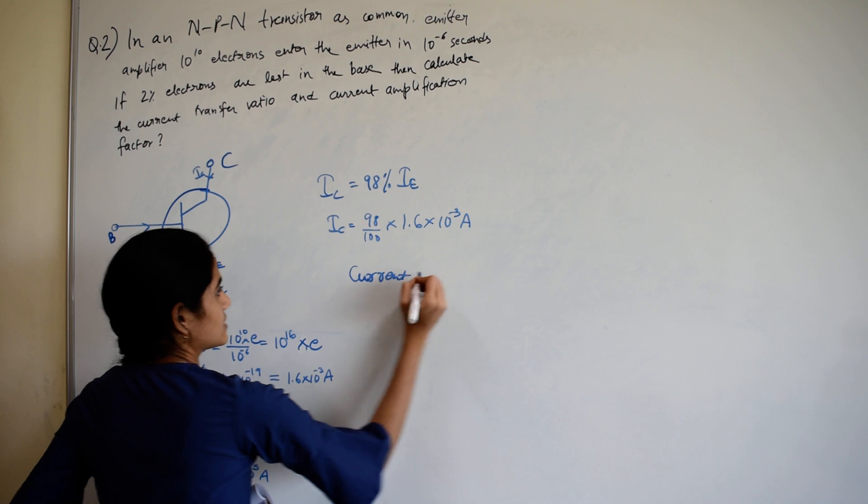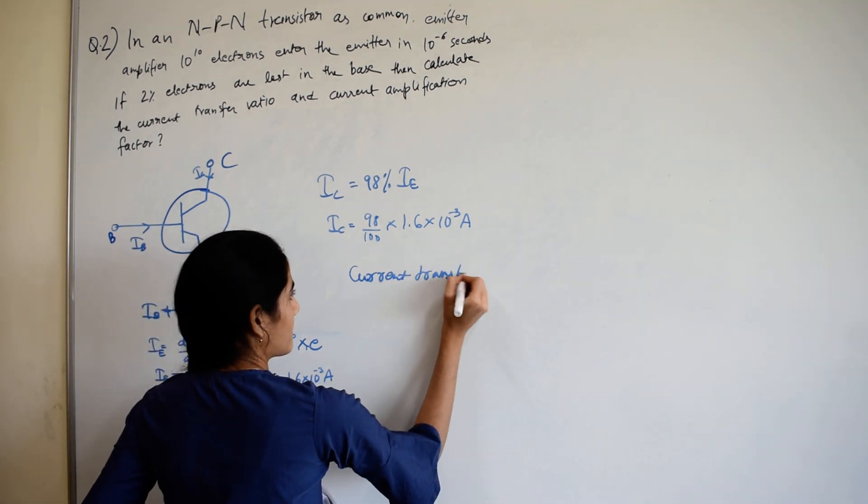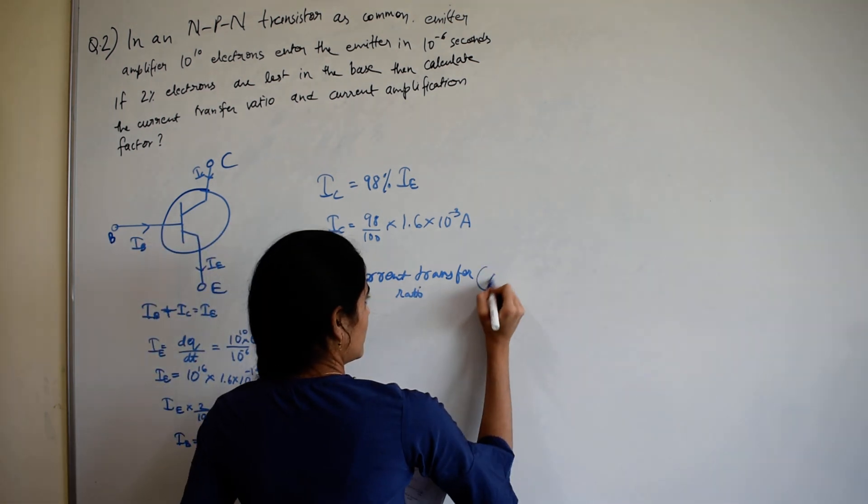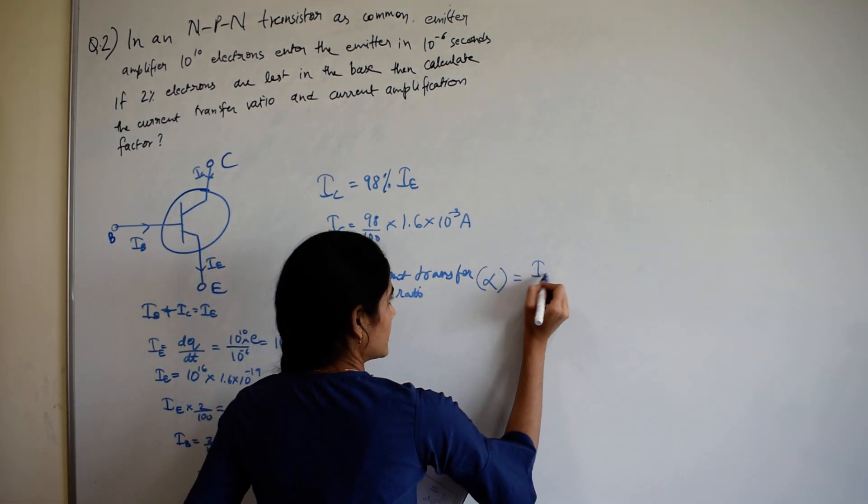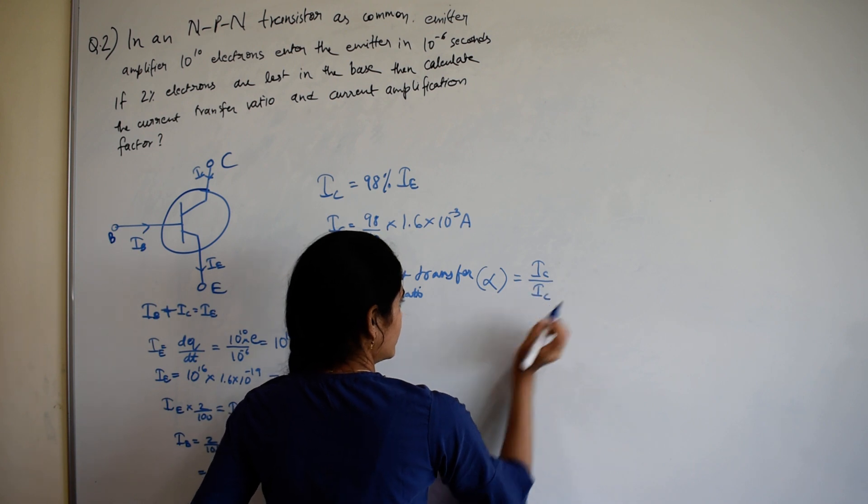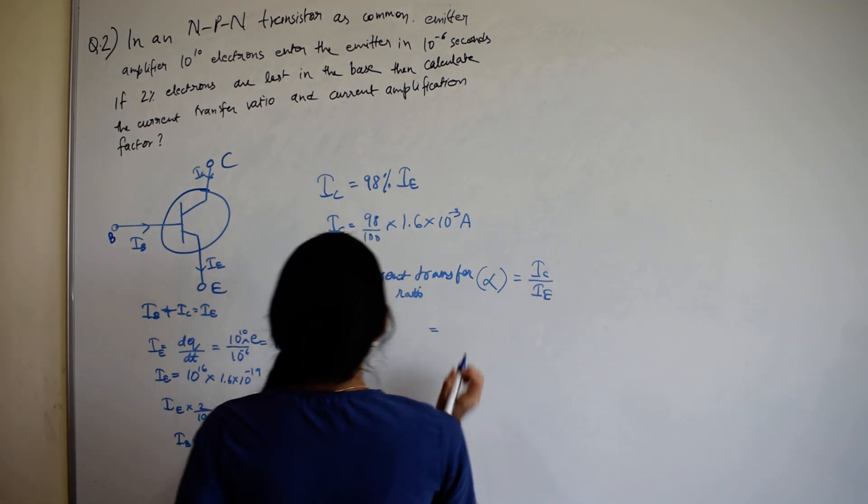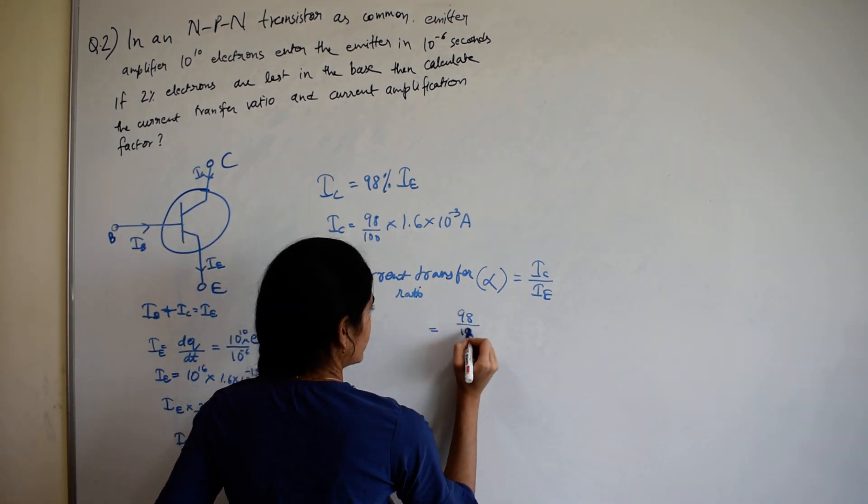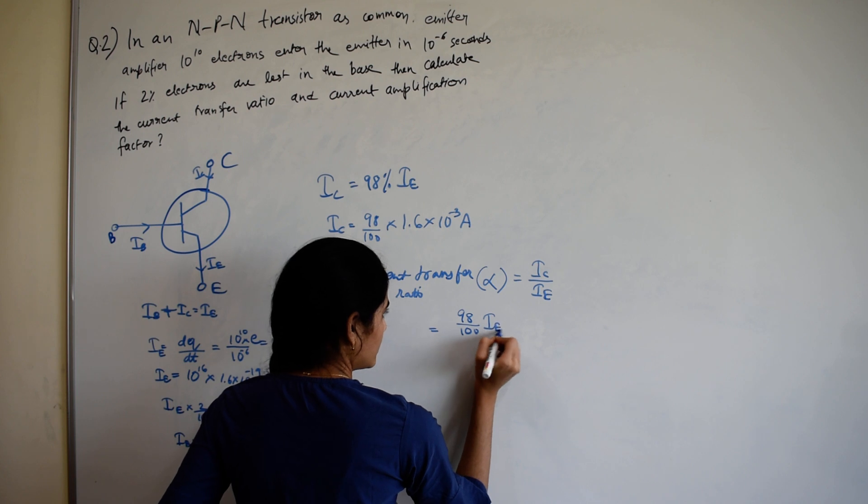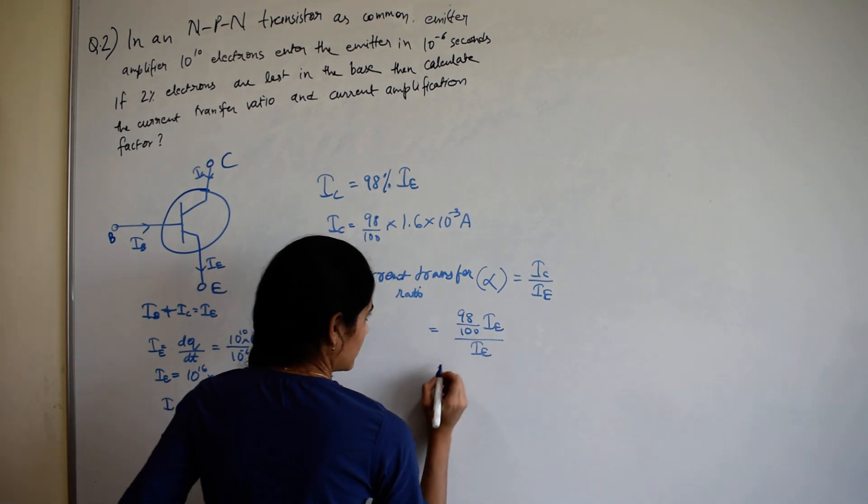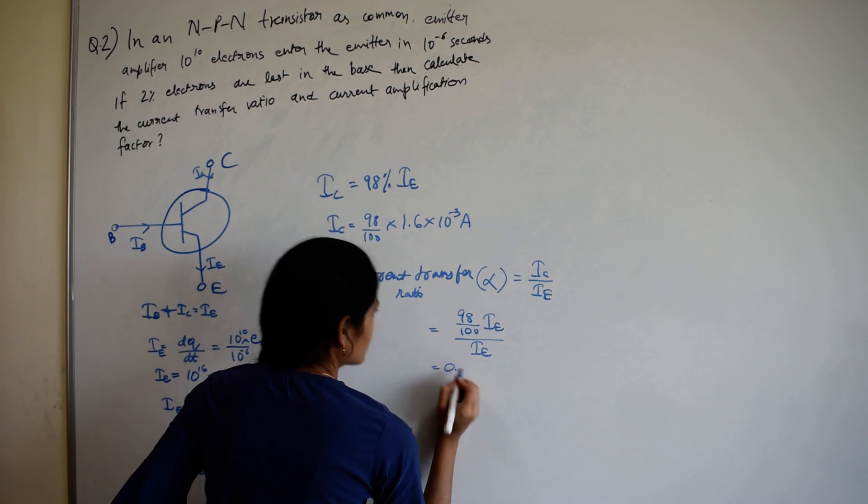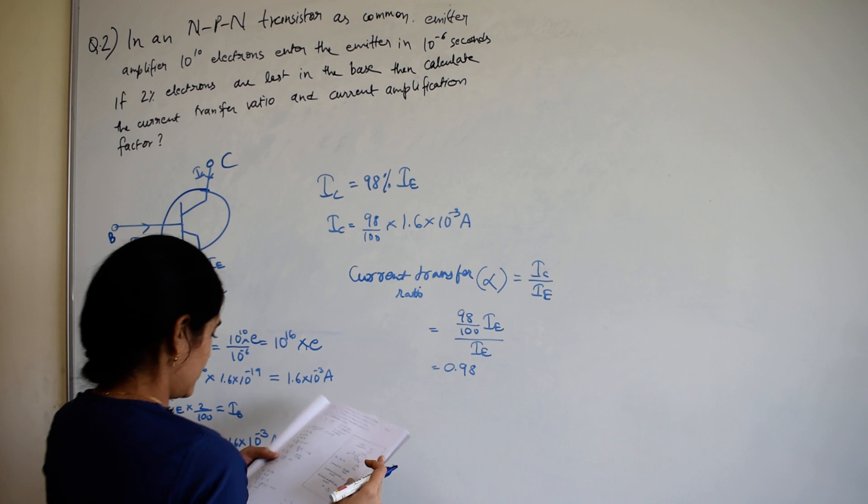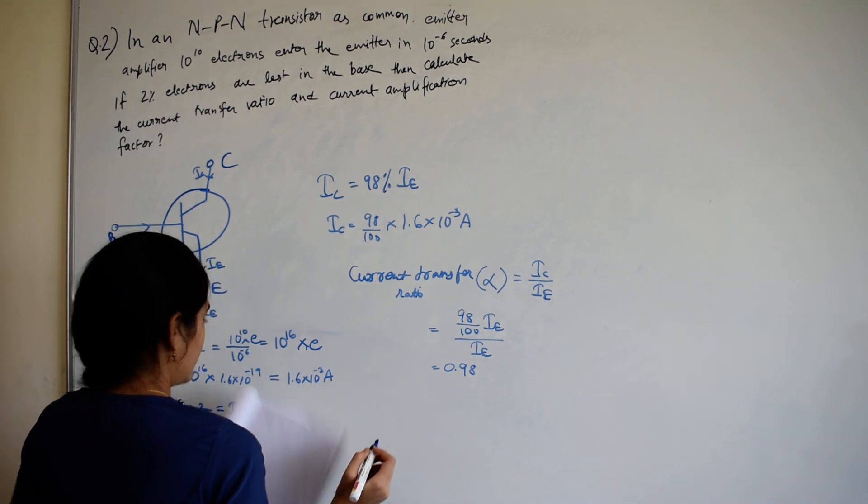Current transfer ratio, alpha is equal to IC divided by IE. IC equal to 98 divided by 100 of IE divided by IE, so the current transfer ratio will be 98 divided by 100.